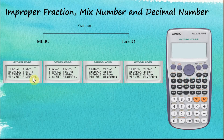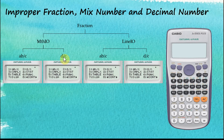For both MathIO and Linear IO, we have the option to display the answer in mixed numbers or improper fractions. So in total we have four types of displays — MathIO has two types and Linear IO has two types. Let's see what the difference is between these four types of displays.